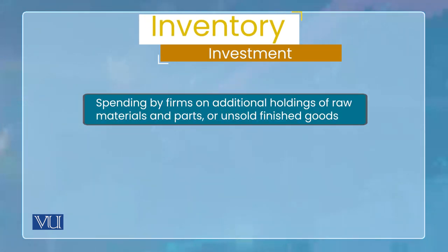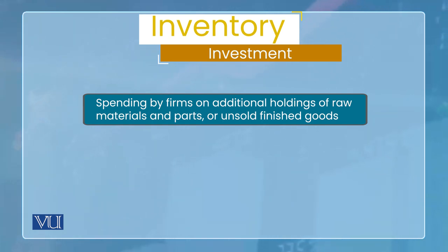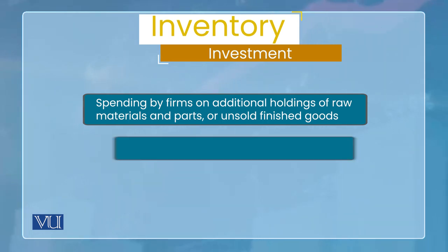Inventory investment ایسے ہوتی ہے کہ جو businesses ہیں، وہ sometimes اپنے پاس extra raw material رکھ لیتے ہیں، تاکہ جب production کے دوران کہیں اچانک raw material ختم ہو جائے تو بیچ میں کوئی delay نہ آئے، process رک نہ جائے — تو اپنے پاس ایک extra stock رکھتے ہیں۔